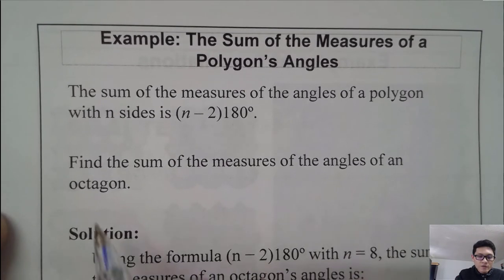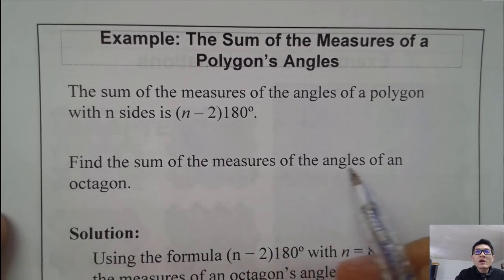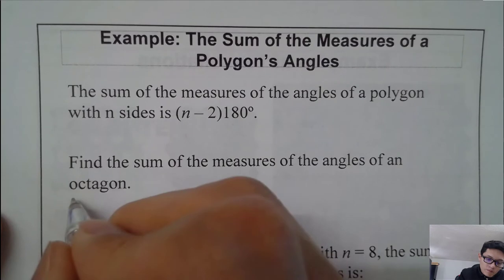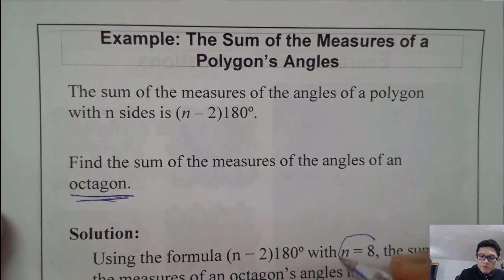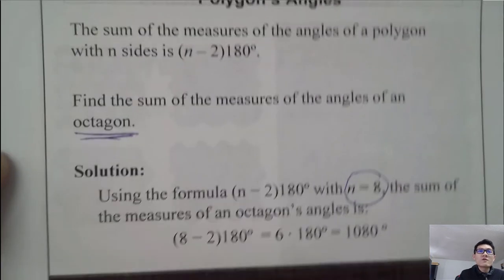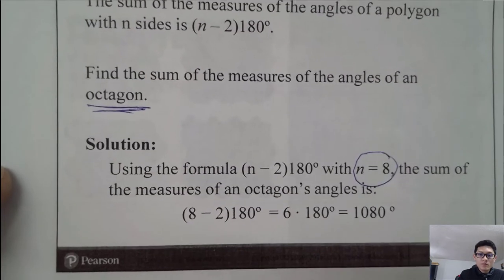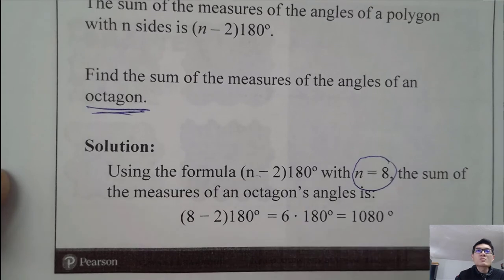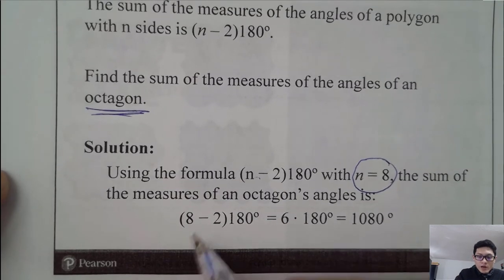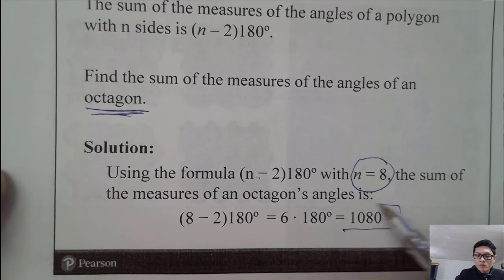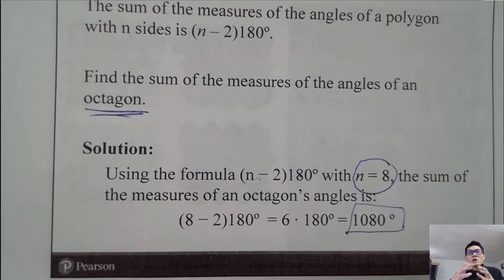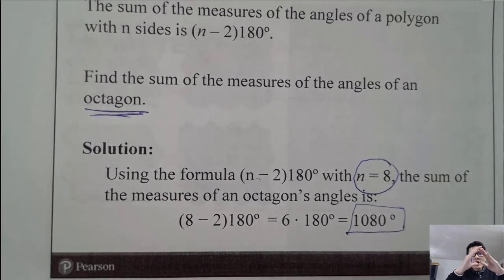For example, find the sum of the measures of the angles of an octagon. An octagon has 8 sides, so n = 8. Using the formula: (8 − 2) × 180 = 6 × 180 = 1,080 degrees. That is the sum of all the angle measures of an octagon.